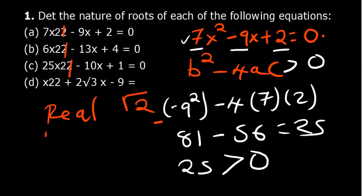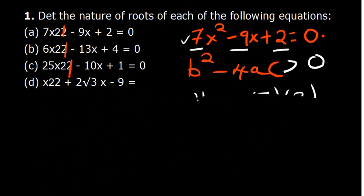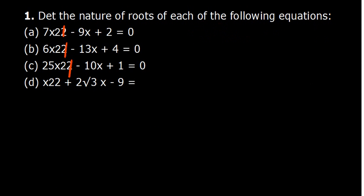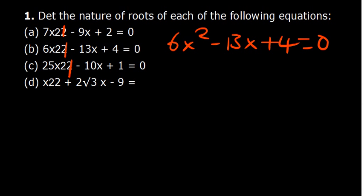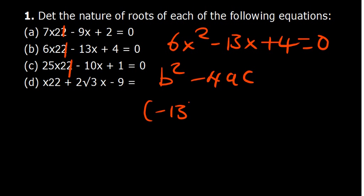For the second equation, 6x squared minus 13x plus 4 equals 0, feel free to pause and try it. The discriminant again determines the nature of the roots. Here b is negative 13, a is 6, and c is 4. So b squared is 13 squared, which is 169.